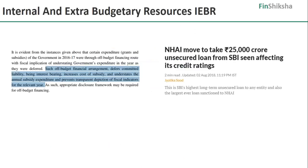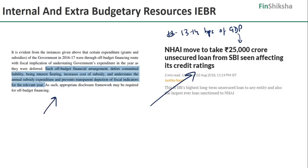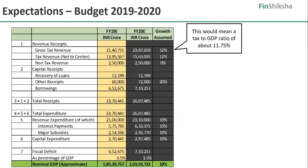Similarly, NHAI is borrowing about 25,000 crore of unsecured loans — approximately 13 to 14 basis points of GDP — which should have come from the government directly. As the CAG report states: 'Such off-budget financial arrangements defer committed liability, being interest-bearing, increase the cost of subsidy, understate the annual subsidy expenditure, and prevent transparent depiction of fiscal indicators for a relevant year.' This is not unique to India — the US government does the same — but it is important to be aware of it.